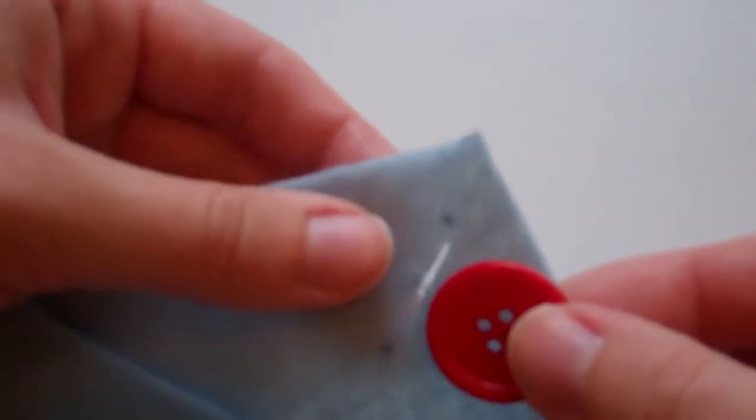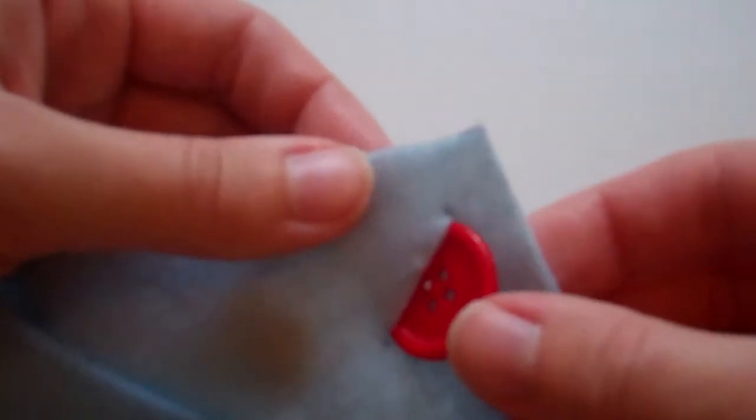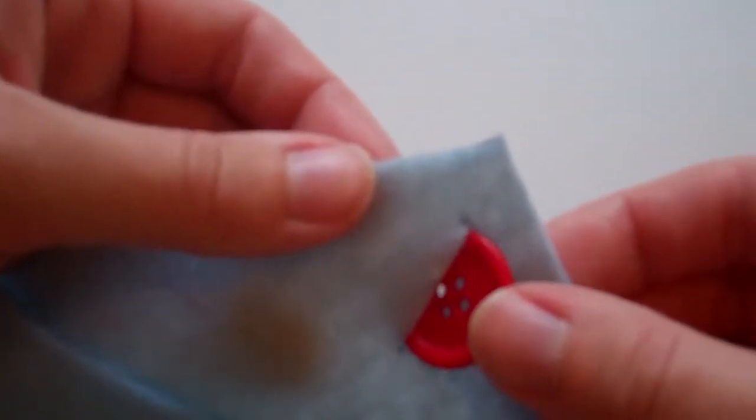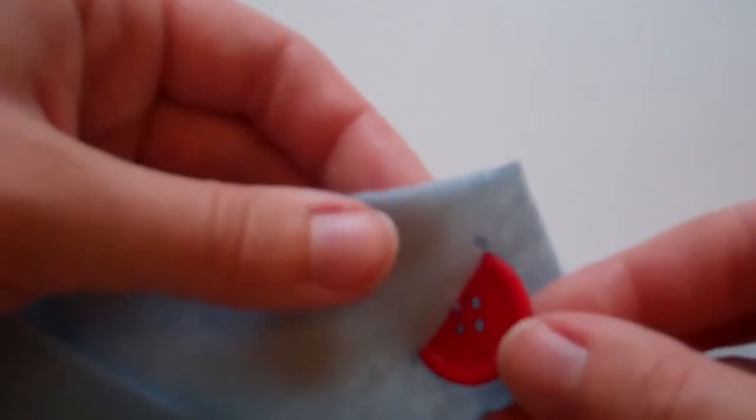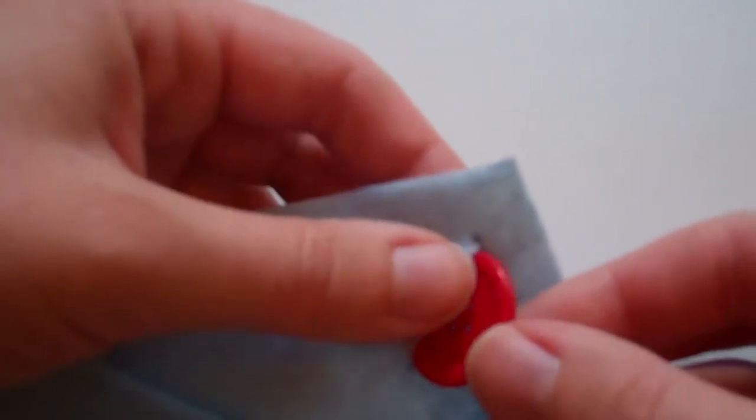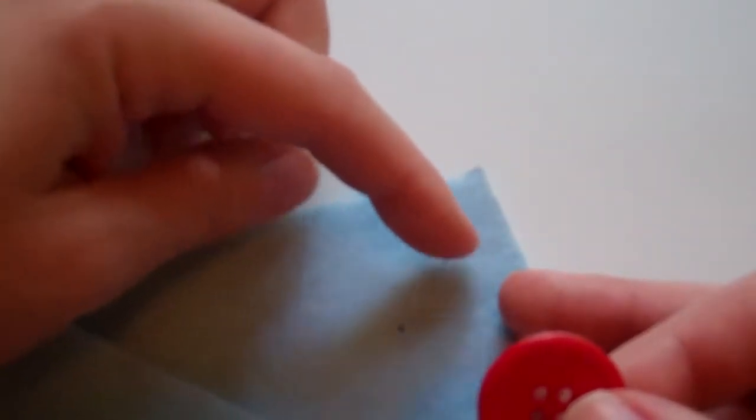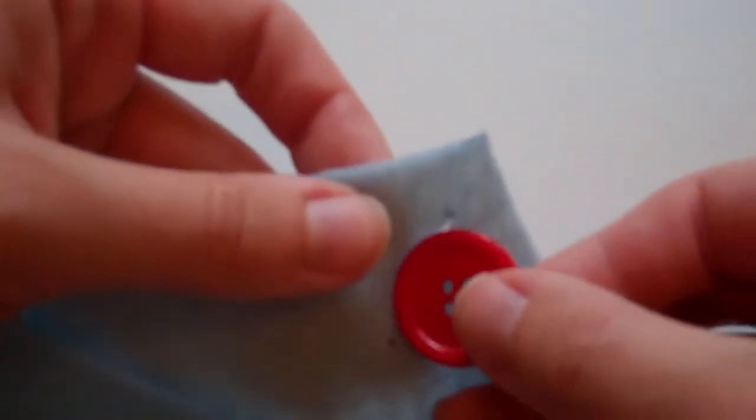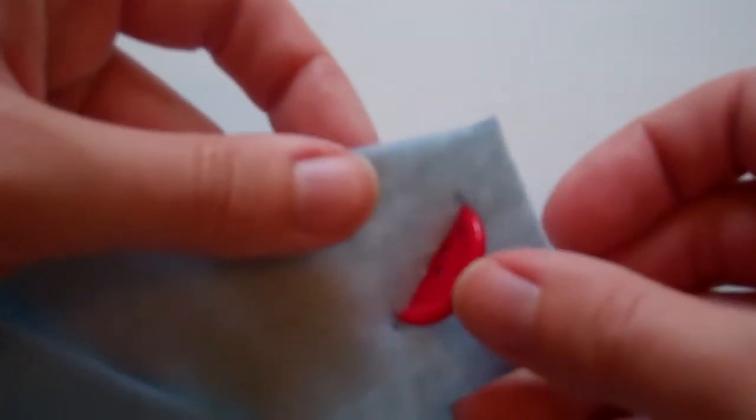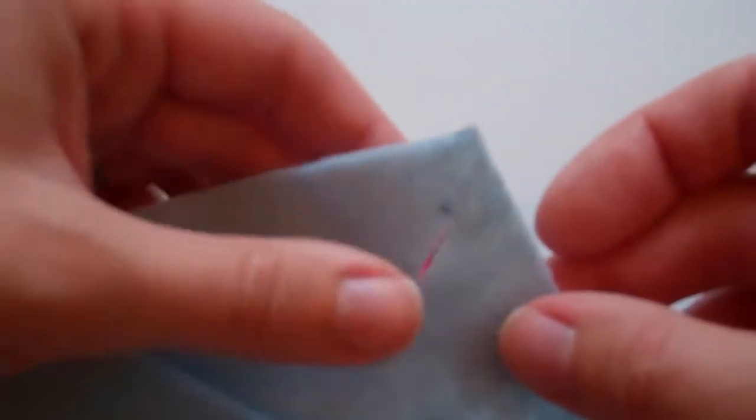Now, to make sure that that is correct, we're going to see if our button fits through. It should be able to fit through with a little pushing. If it just falls through, you probably made your hole a little bit too big, and you might need to add some stitches across the top and the bottom to make the hole smaller. But it looks like when I push this through, I have to push a little bit, but it does go through. So, my hole is right where it needs to be.